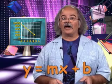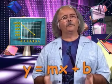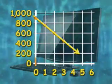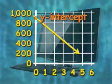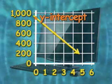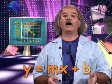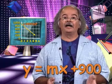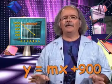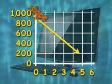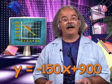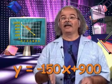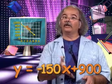As valuable as this information is when graphing, it is equally valuable to understand what these quantities mean in interpreting the problem. The Y-intercept is truly a starting point — not just for the graph, but for the real-world situation. In this case, the Y-intercept 900 is the value of the computer when it's new, or in terms of time, at X equals zero, when no time has elapsed. The slope is the rate of change — how the value of the computer is changing over time. The slope in this case is negative, indicating the value is decreasing over time.